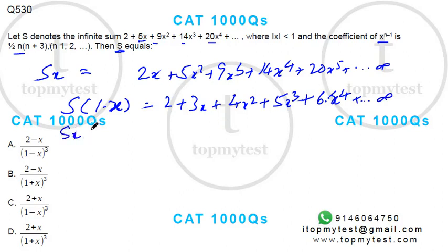If I multiply with x, you will get 2x plus 3x squared plus 4x cubed plus 5x to the power 5 and so on. If I subtract this again,